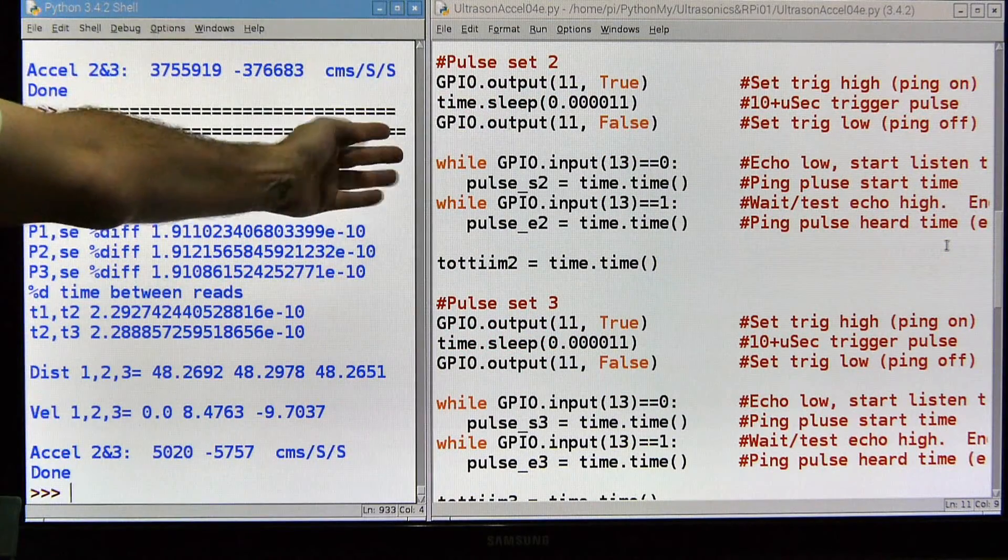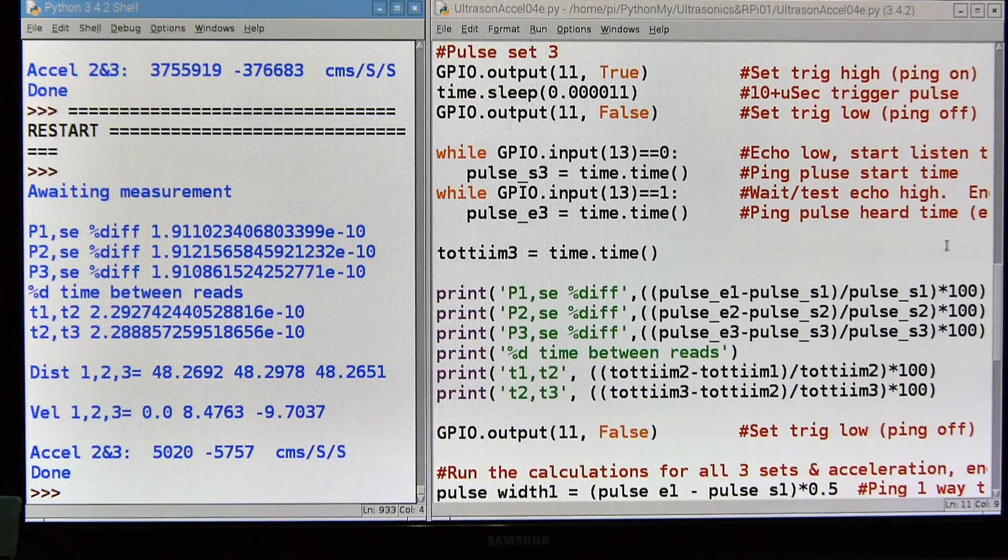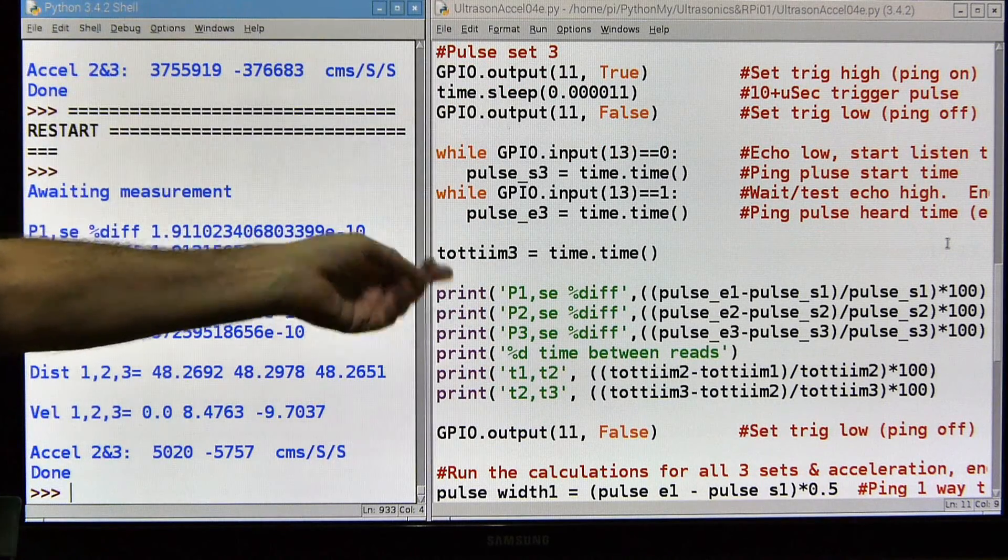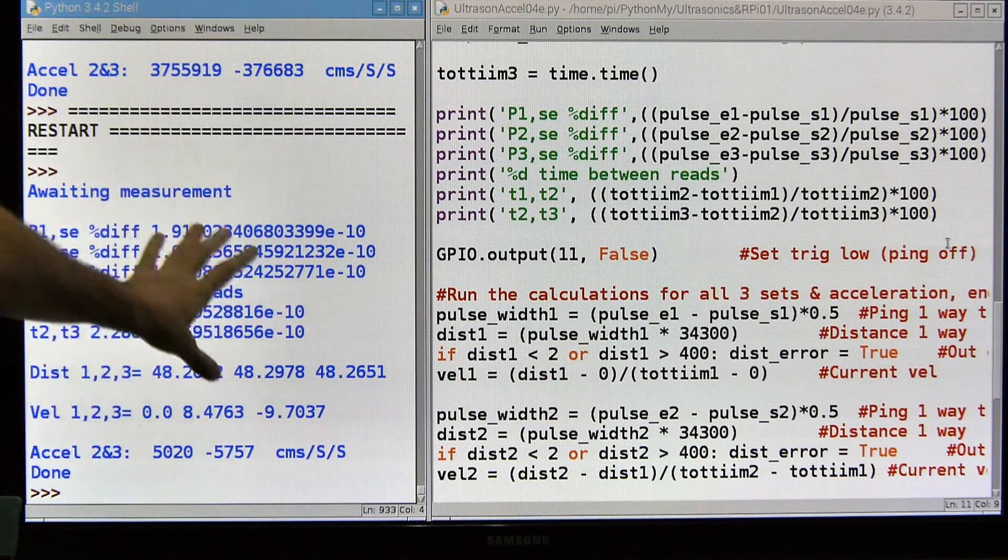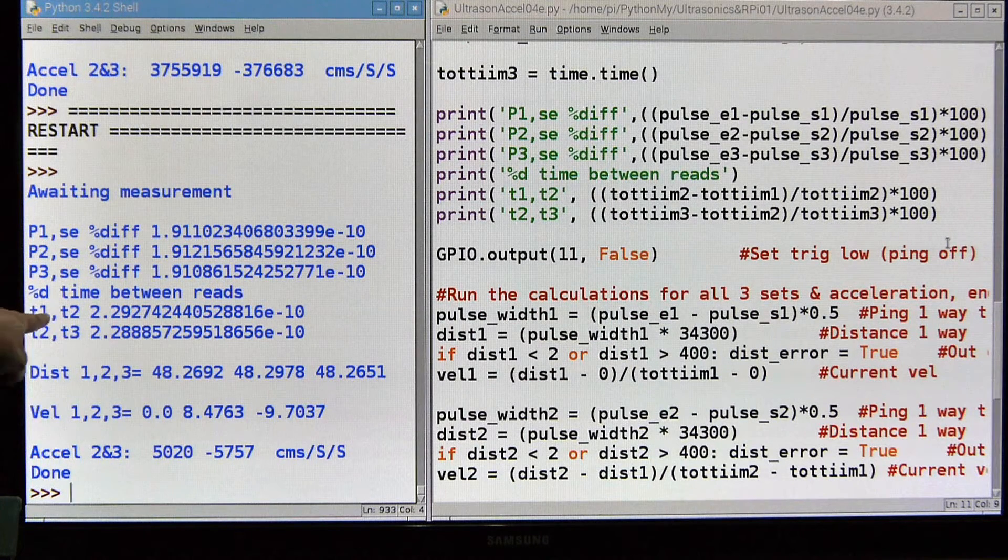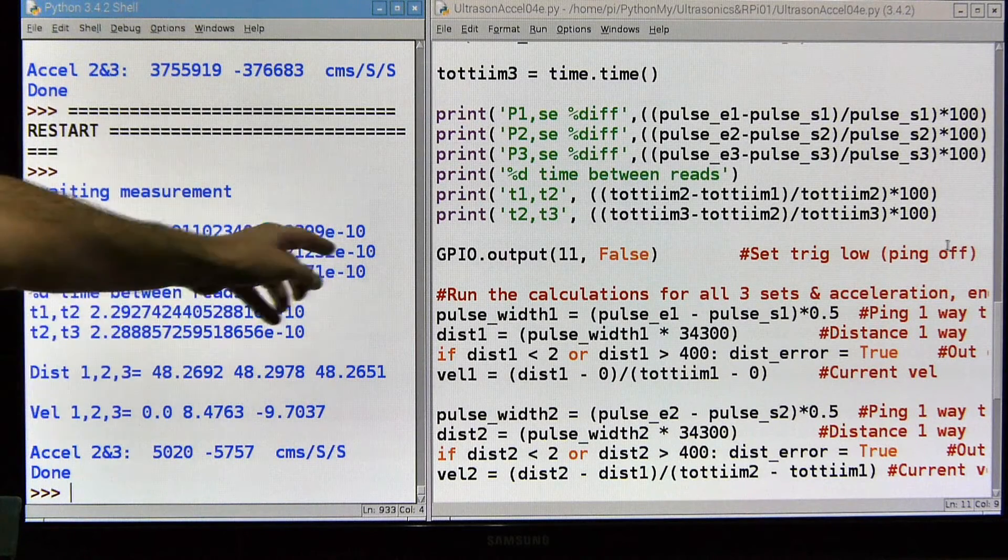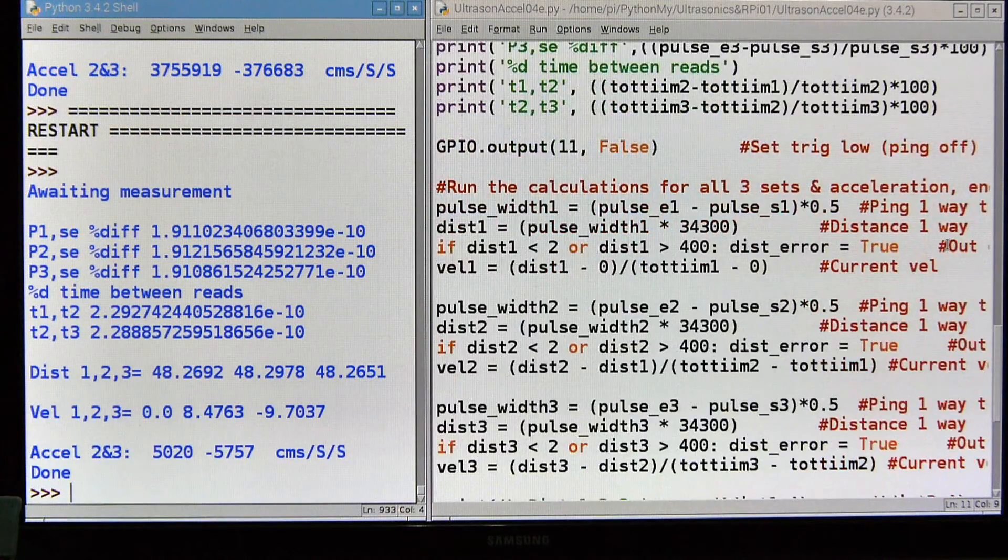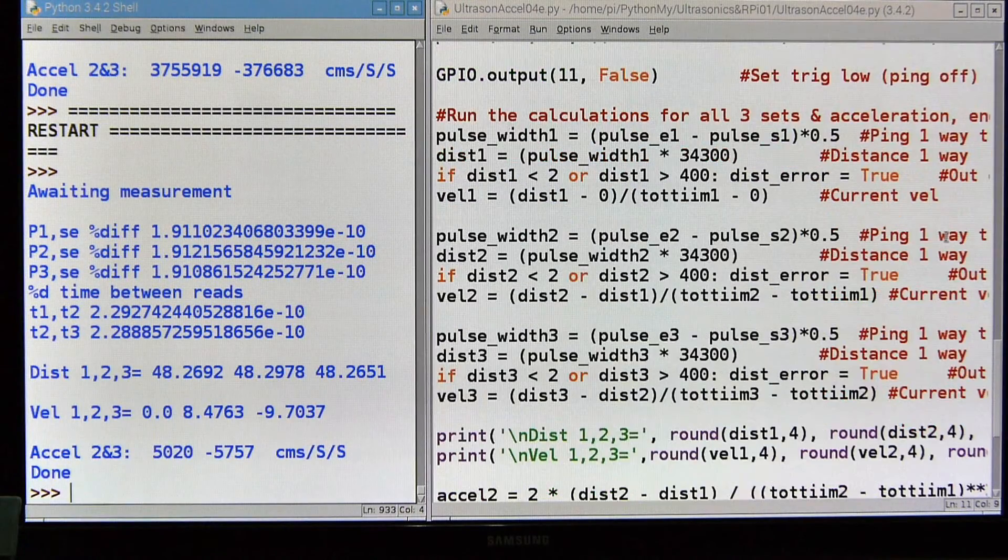Pulse set 2, exactly the same thing except I'm using different variables to capture the times. And pulse set 3, again ditto. So the program just falls through these and it takes the readings as fast as possible. Capture the last time and then I print these that you see over here. I print this stuff over here. The pulse times and the delta times between total time 1, total time 2, total time 2 and total time 3. So that's these over here. So I'm printing all that stuff out so we can see what's going on. I'm going to turn the ping off just to make sure it's off just to be neat and clean.